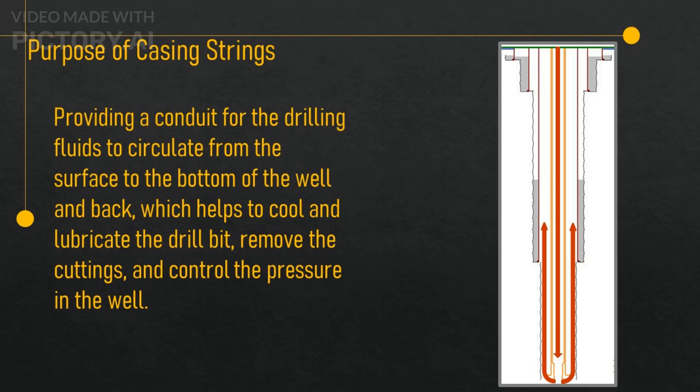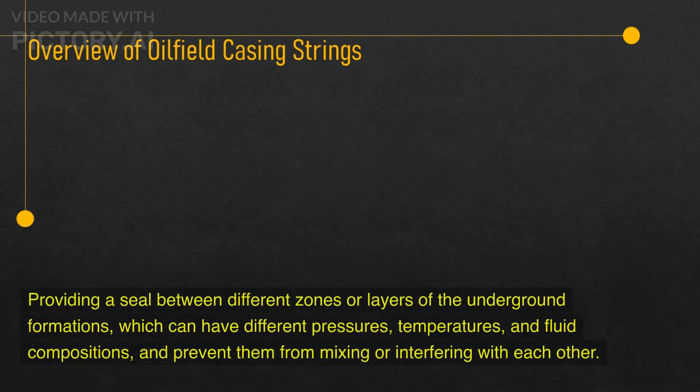It provides a conduit for the drilling fluids to circulate from the surface to the bottom of the well and back, which helps to cool and lubricate the drill bit, remove the cuttings, and control the pressure in the well. It also provides a seal between different zones or layers of the underground formations, which can have different pressures, temperatures, and fluid compositions, and prevents them from mixing or interfering with each other.